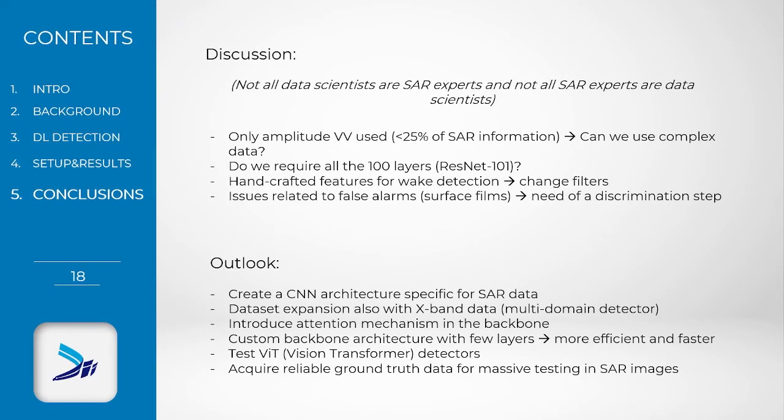Concluding this presentation, it is important to point out some limitations of this methodology. Object detectors do not take full advantage of the observed data. Besides, we do not require 100 or more layers, since the number of features is limited. Given this consideration, in future work we will create a convolutional neural network specific to synthetic aperture radar. We are going to test and implement different solutions and, most importantly, acquire reliable ground-truth data for massive testing.